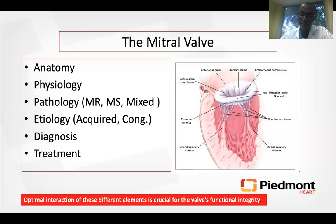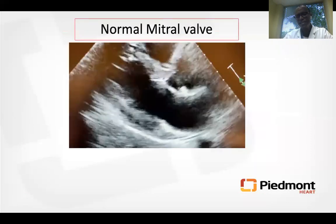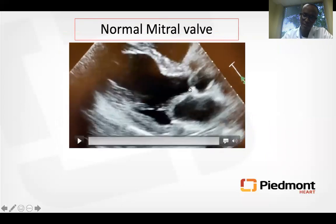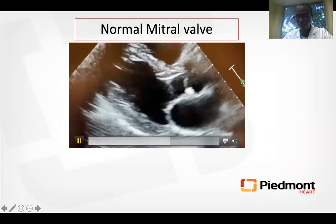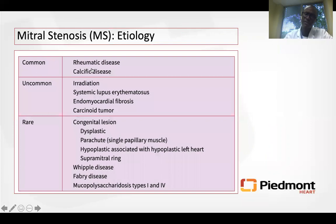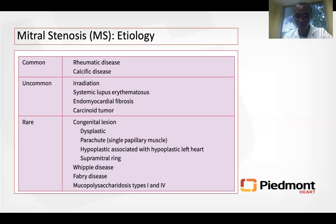This is a 2D echo showing the parasternal long axis view — the mitral valve with anterior and posterior leaflets, the aortic valve, anteroseptal and inferolateral walls. In talking about mitral stenosis, the most common cause worldwide is acute rheumatic fever. The second most common, particularly in the Western world, is calcific degeneration of the mitral valve. Mitral annular calcification most often gives mitral regurgitation but can also cause stenosis.